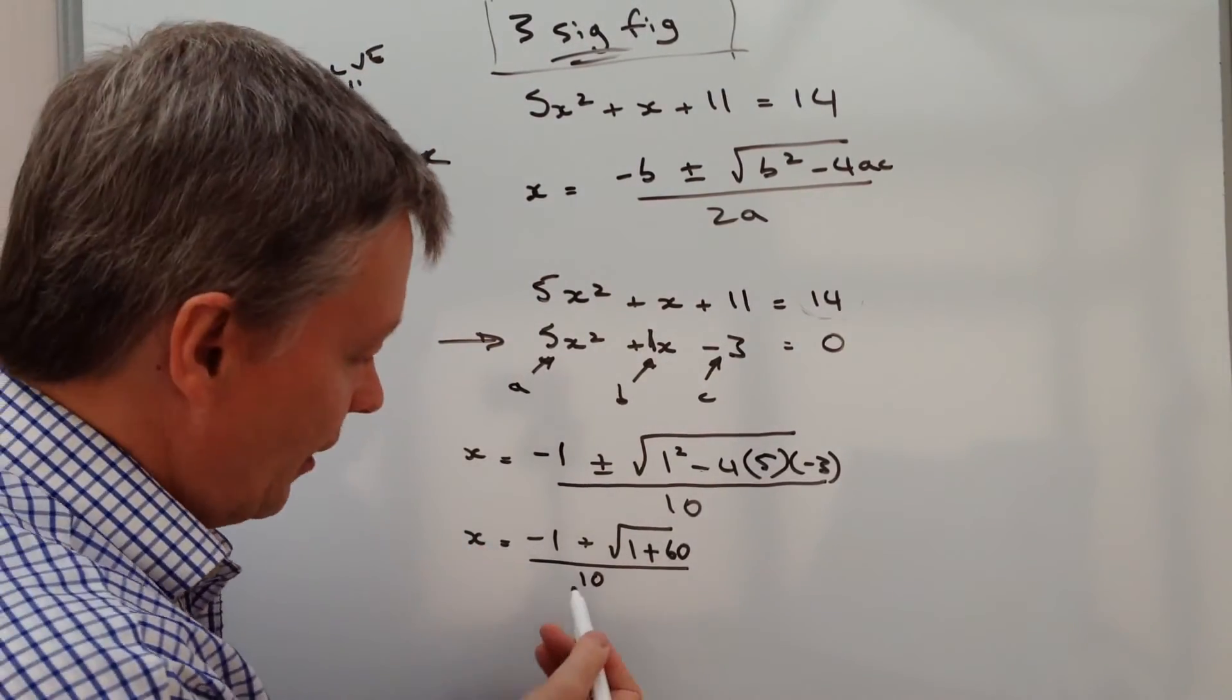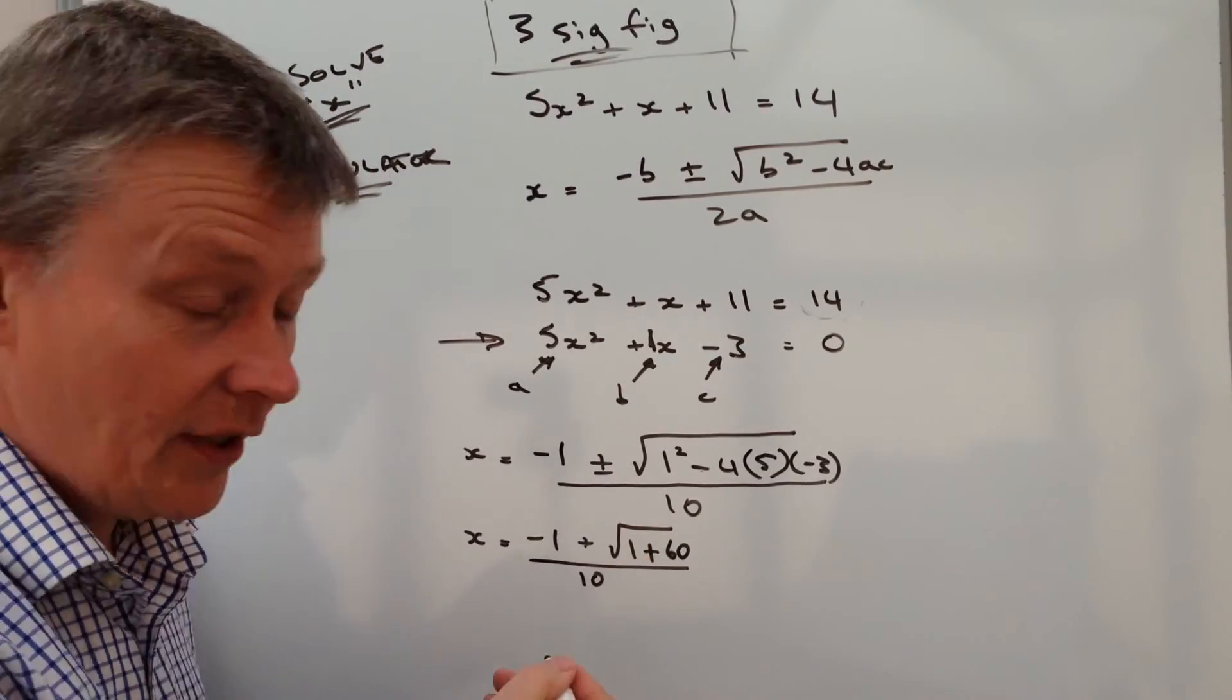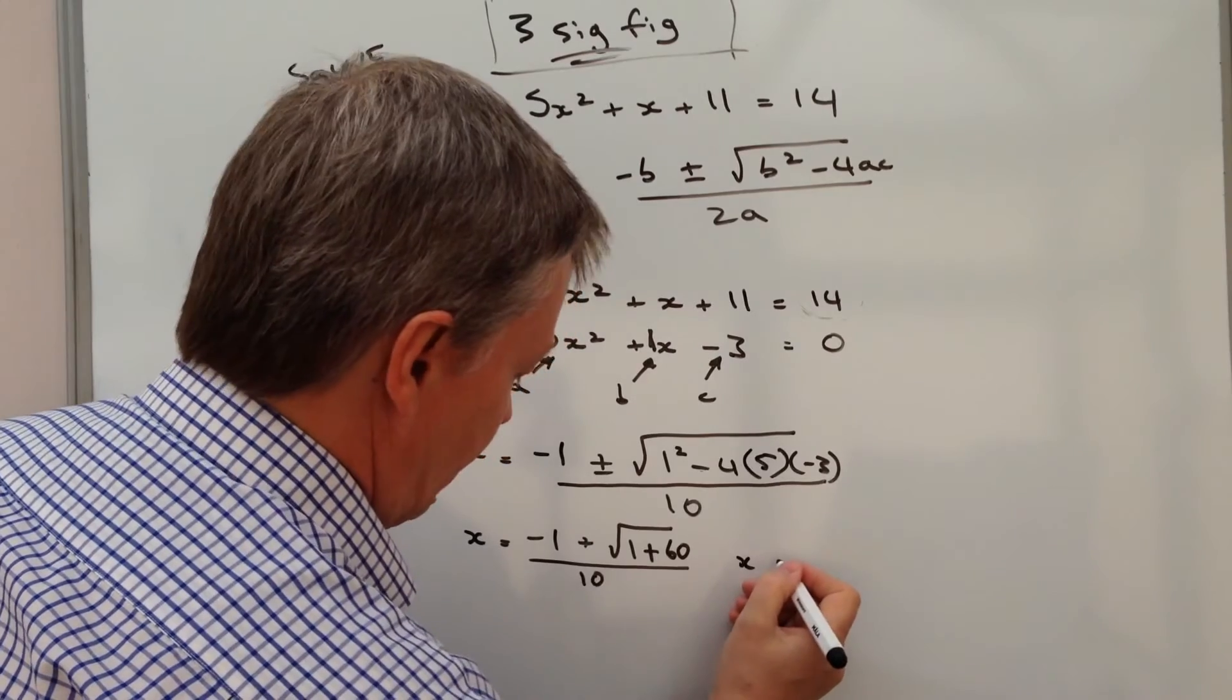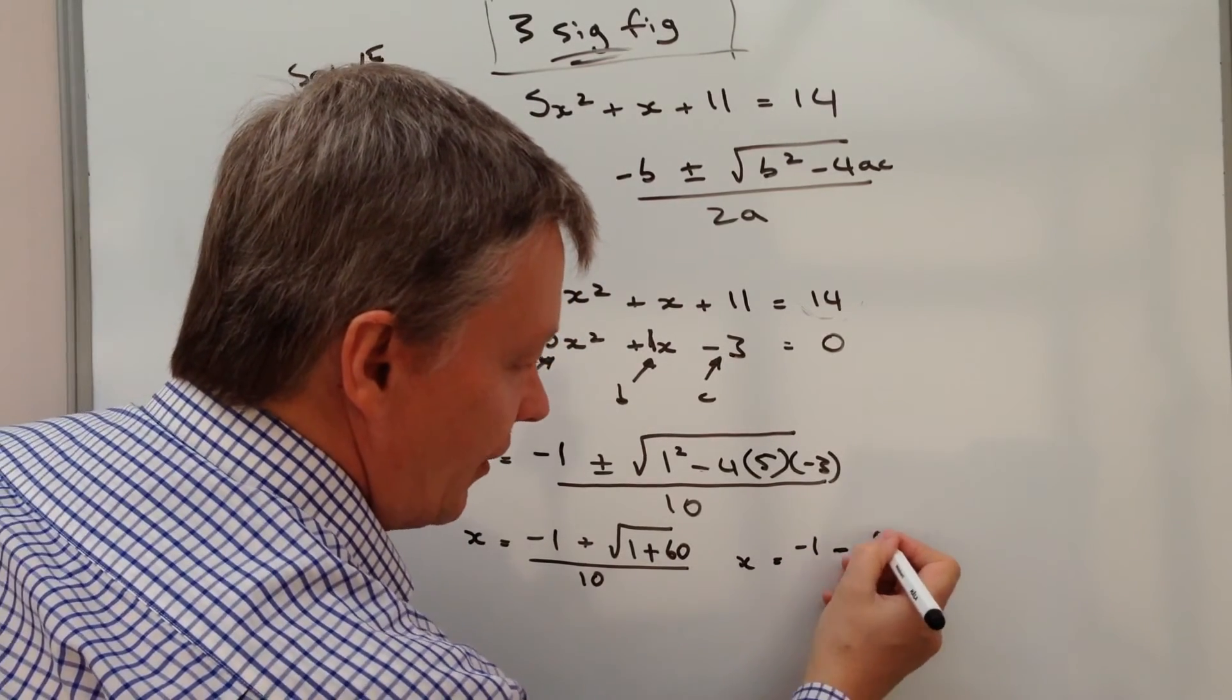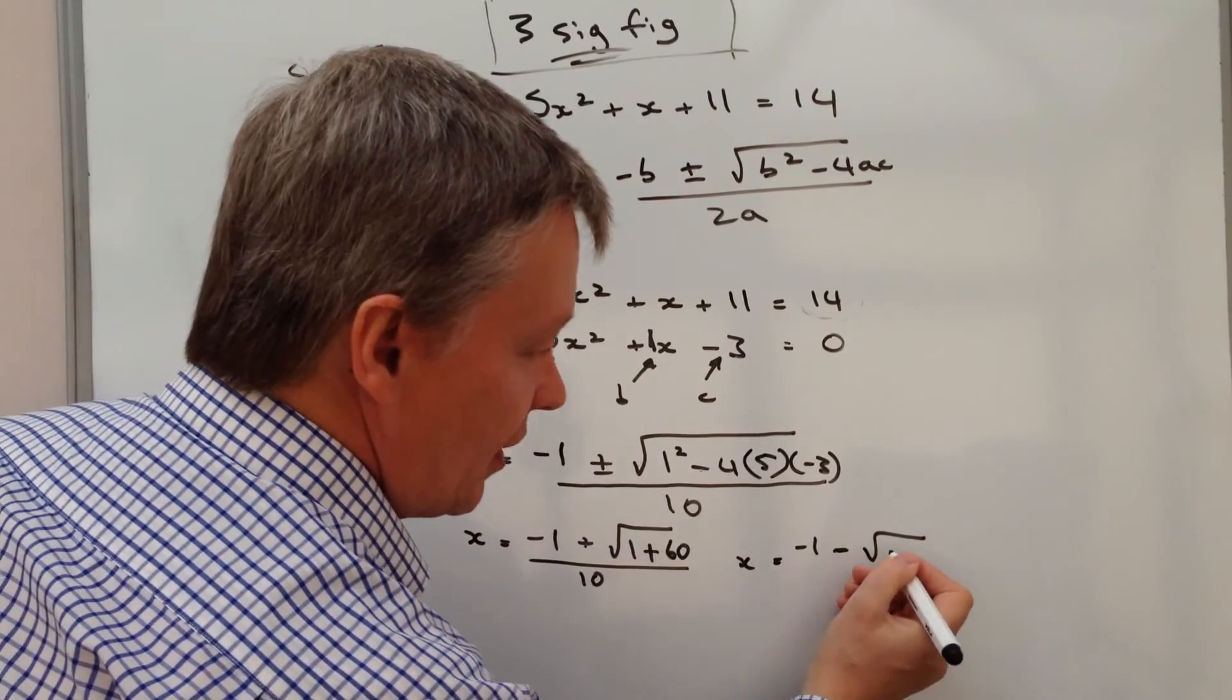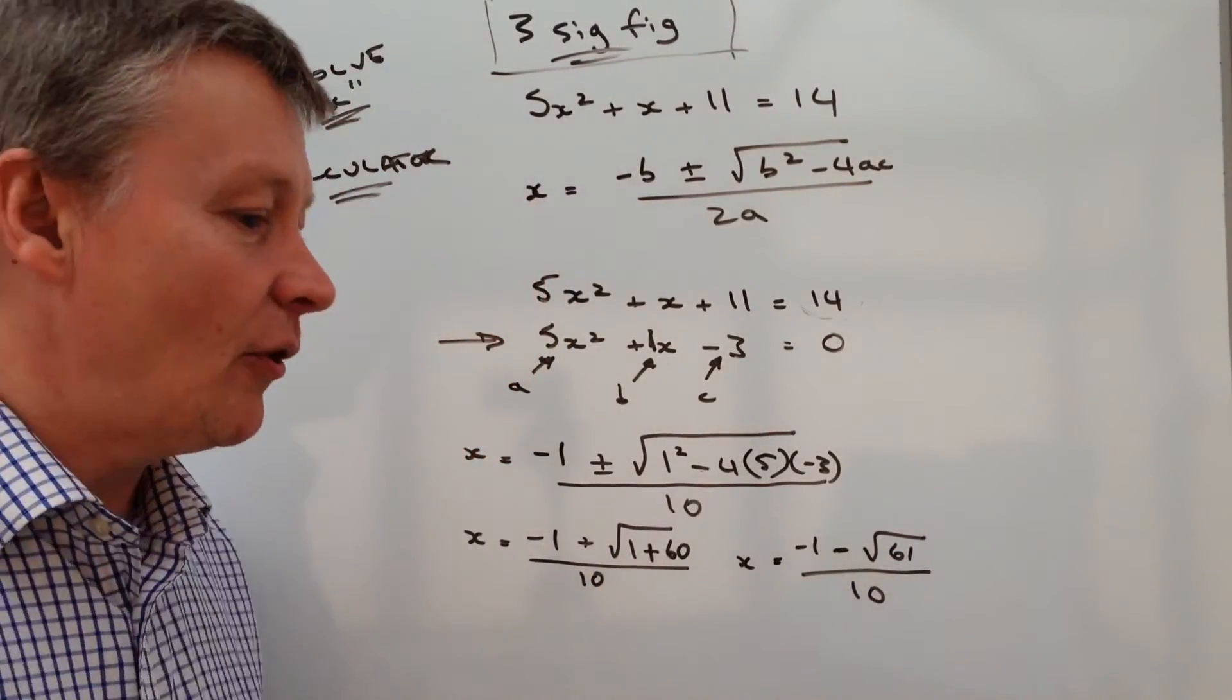The other value I've got for x is going to be where this is minus, because it's plus or minus. So I've got minus 1 minus the square root of 1 plus 60, which is 61, and that's going to be divided by 10.